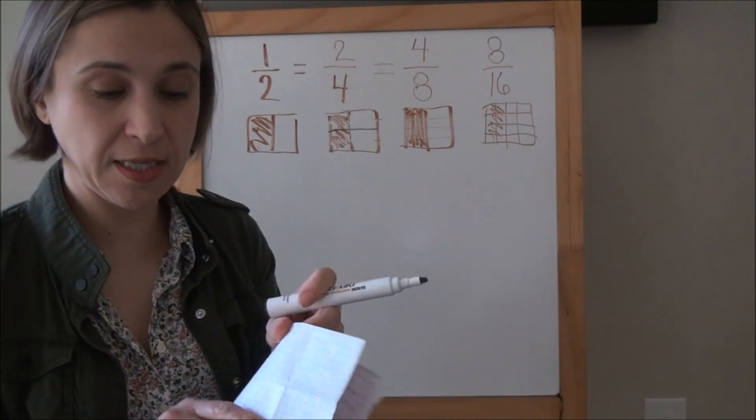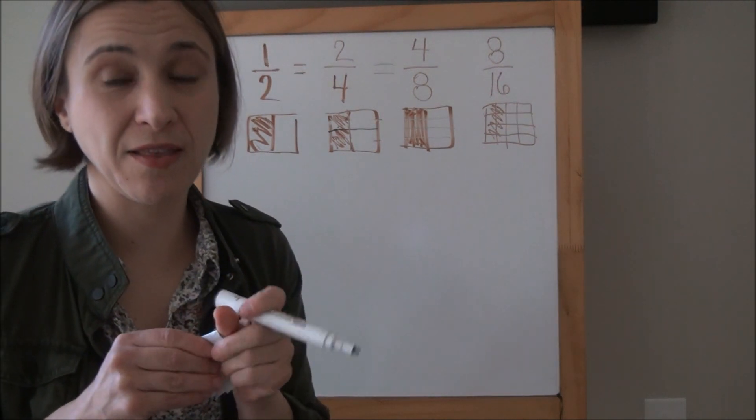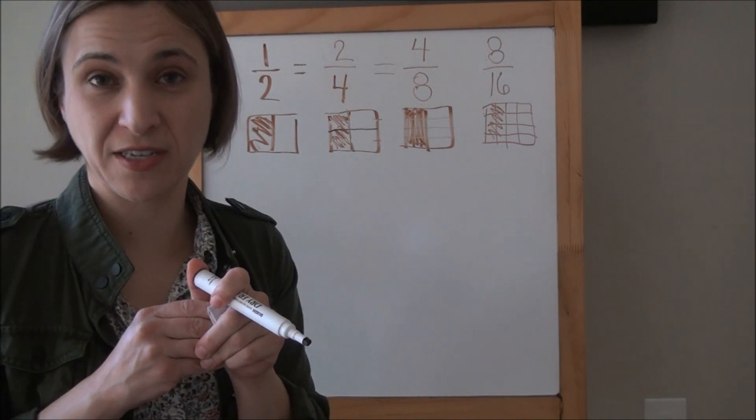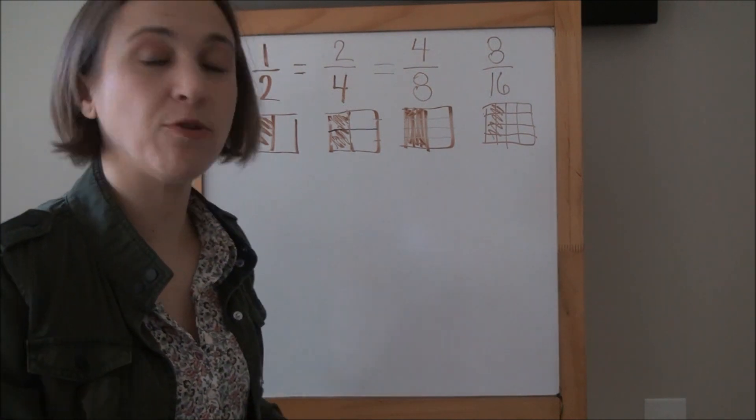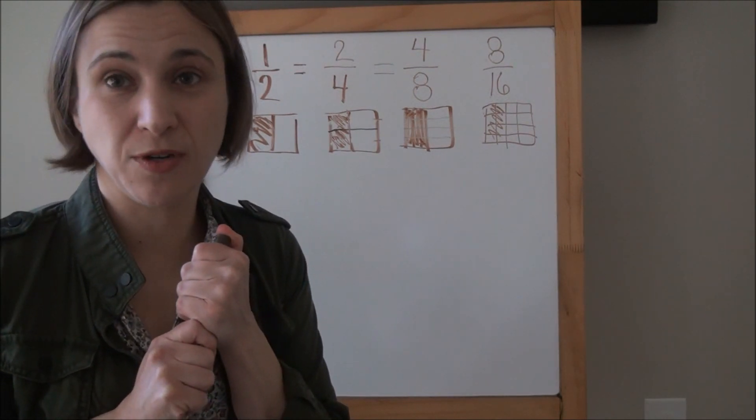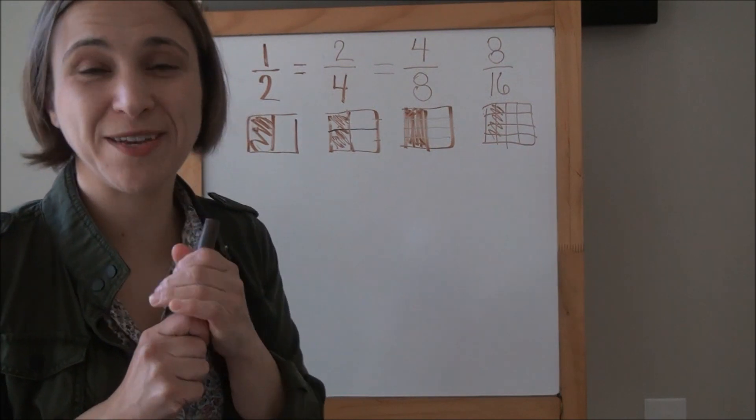So now think back to that Hershey bar that Jose and I were eating. Jose said that he thought three-twelfths of the bar was left. I said one-fourth of the bar is left. Is it possible that both of us are right? Have a good day boys and girls, thank you.